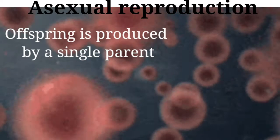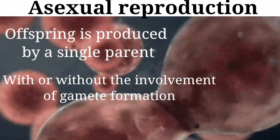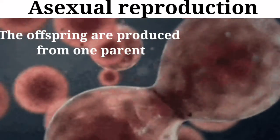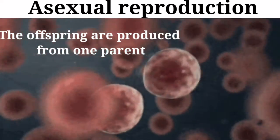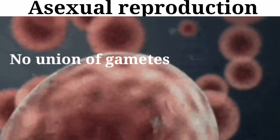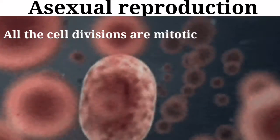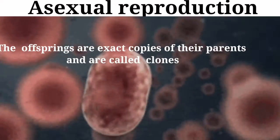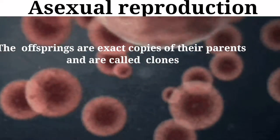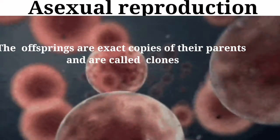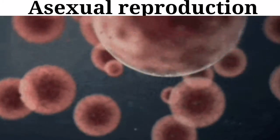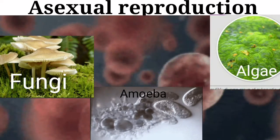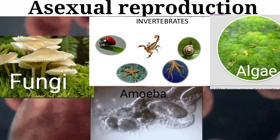Asexual reproduction is a kind of reproduction where offspring is produced by a single parent with or without the involvement of gamete formation. The offsprings are produced from one parent, that is uniparental. There is no union of gametes. All the cell divisions are mitotic. All offsprings are morphologically and genetically similar or identical, and are called as clones. It is very common in organisms with relatively simple organization, for example amoeba, algae, fungi, and some invertebrate animals.